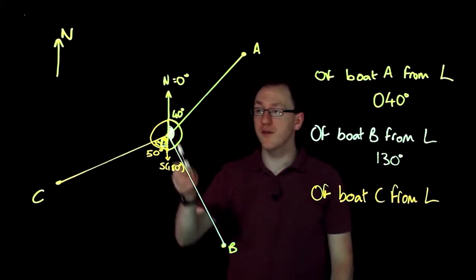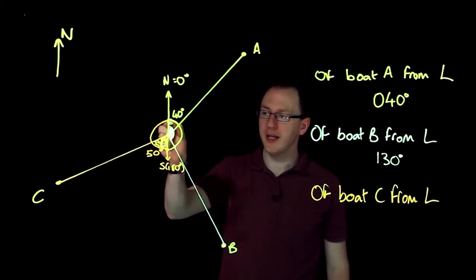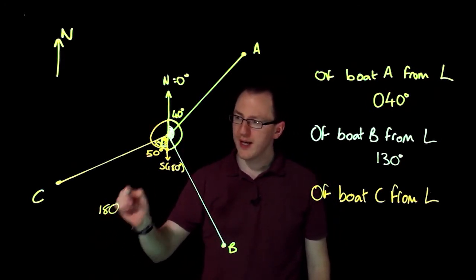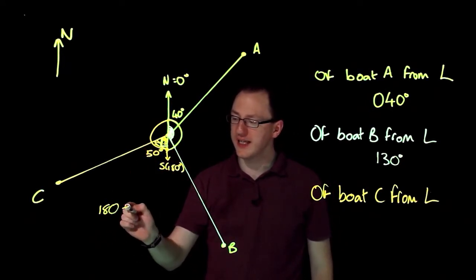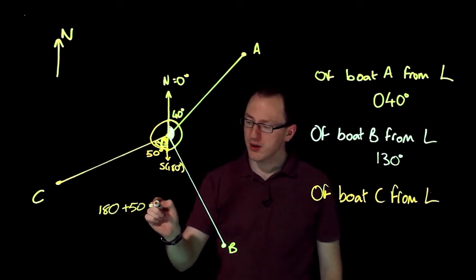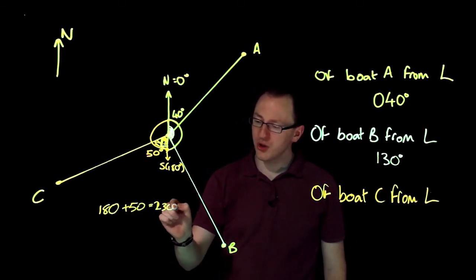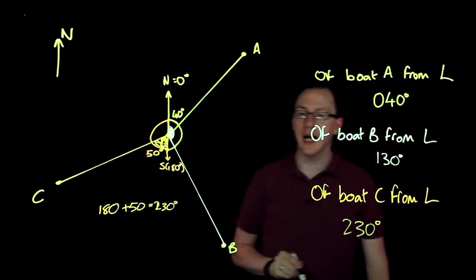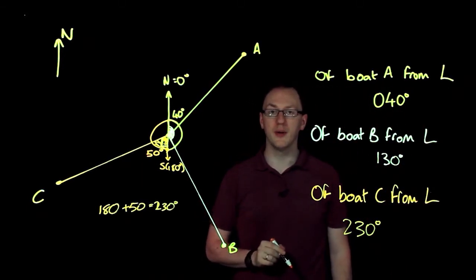So the bearing has to be measured from north. Well, around here, I've got 180 degrees to get to south. I've got an extra 50 degrees to get to C. So the bearing is going to be 230 degrees. So the bearing of boat C from the lighthouse is 230 degrees.